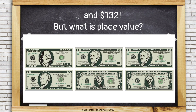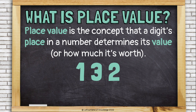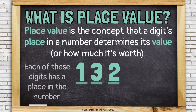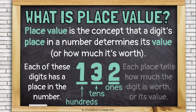But what is place value? Place value is the concept that a digit's place in a number determines its value, or how much it's worth. Let's look at the number 132. Each of these digits has a place in the number. The two is in the ones place. The three is in the tens place. And the one is in the hundreds place. Each place tells us how much the digit is worth, or its value.